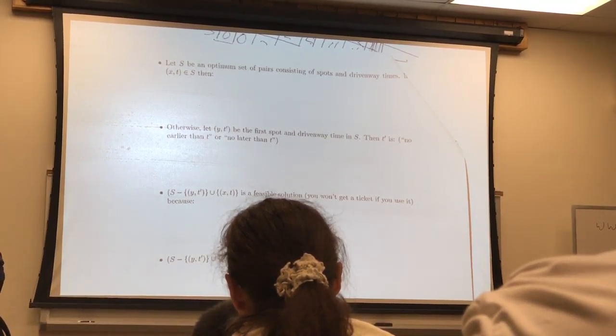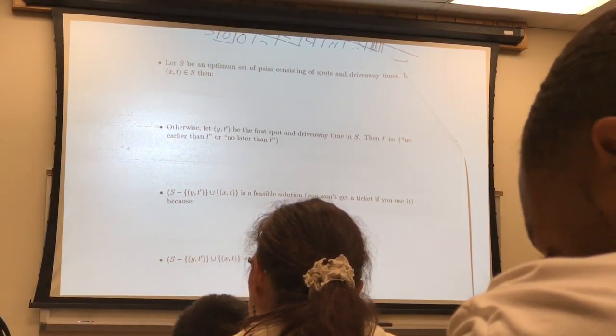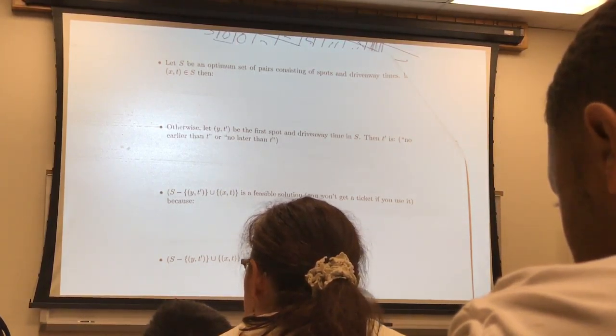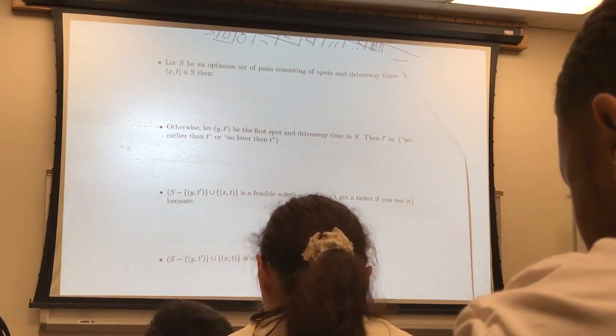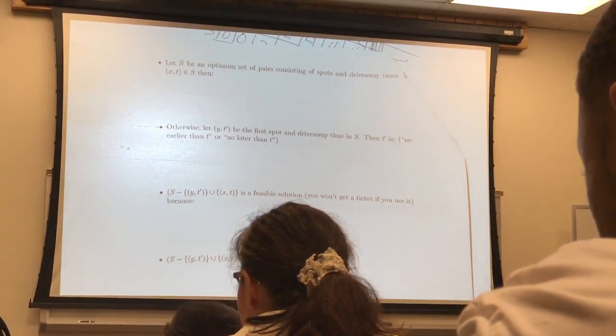So they got from their first stop, you're not going to get a ticket before your first stop because of the definition of it. The meter reader's not going to stop there before you move. How do we know that you can make it from there to your friend's next stop?